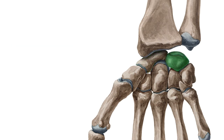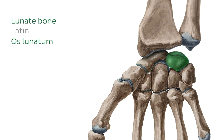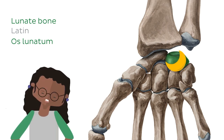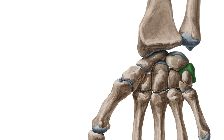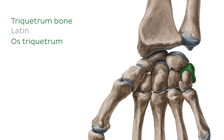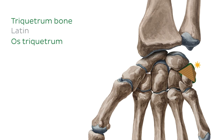Medial to the scaphoid is the crescent-shaped lunate bone. Its name is derived from lunar, referring to its crescent-moon-like shape. Medial to the lunate is the triquetrum, or triquetral bone. The name is a little bit funny and hard to say, but it refers to this bone's three corners, giving it a somewhat triangular or pyramidal appearance.